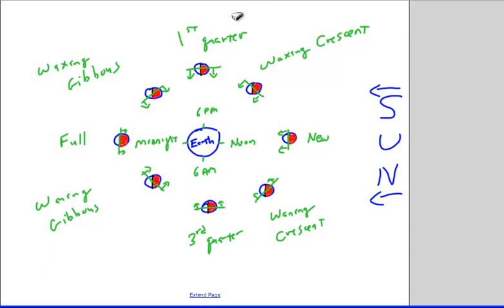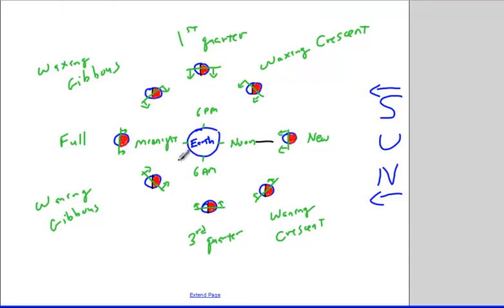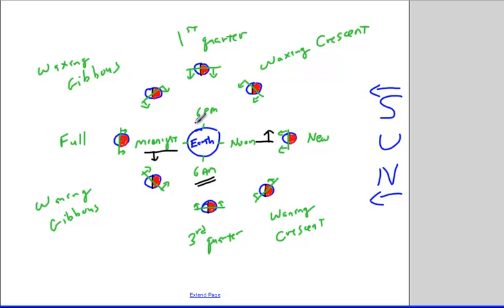Let's do another example — at 6 a.m., what phase of the moon is just rising? At 6 a.m., we draw in our horizon and look at what's moving above it. The new moon is just rising here at 6 a.m., just coming up over the horizon — of course you won't be able to see it because it's not visible. And the full moon would just be setting, going below the horizon.